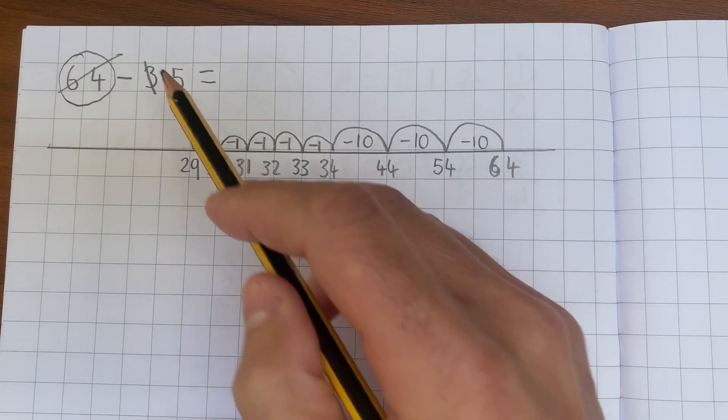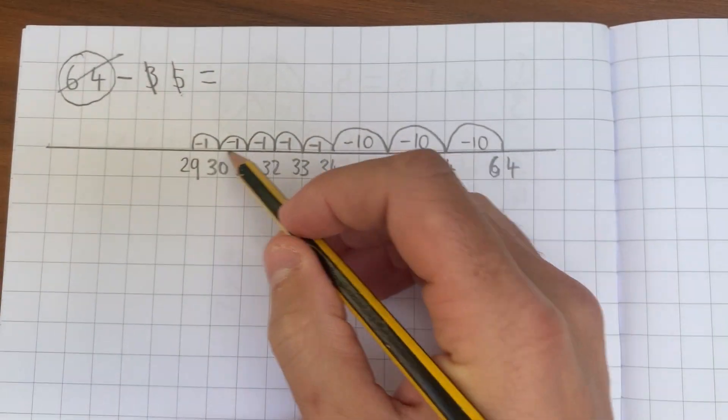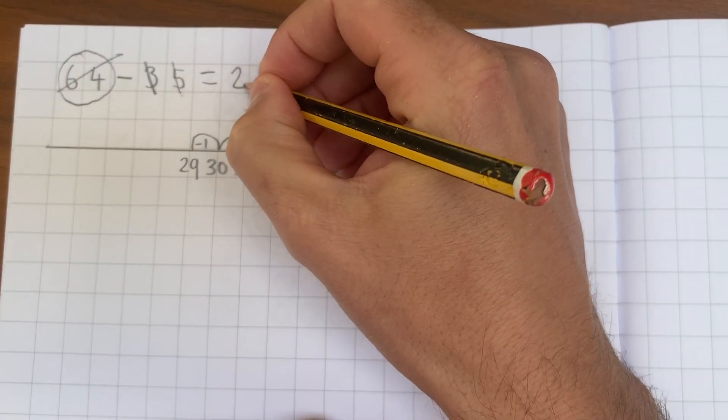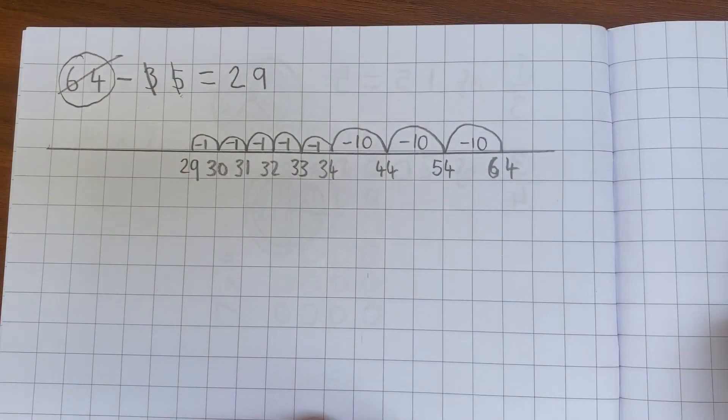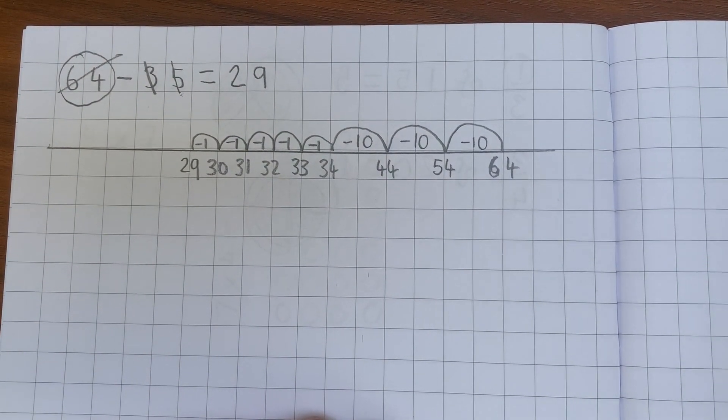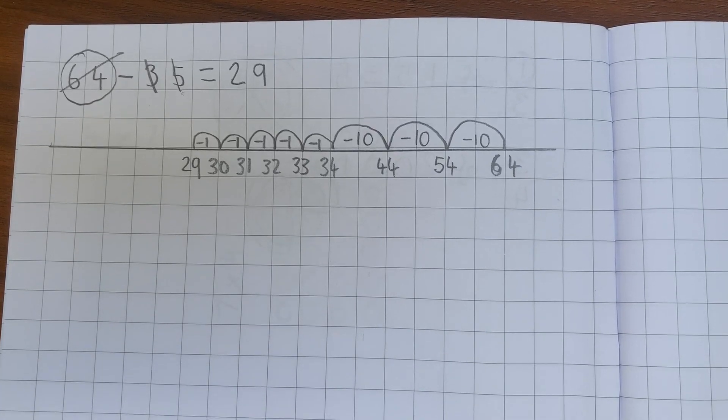So I've counted back three tens. I've counted back five ones, and I've ended up with 29. So the answer is 29. And that is how to subtract a two-digit number from a two-digit number using a number line to help you.